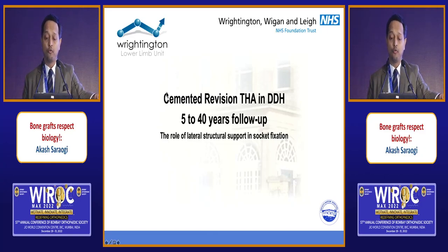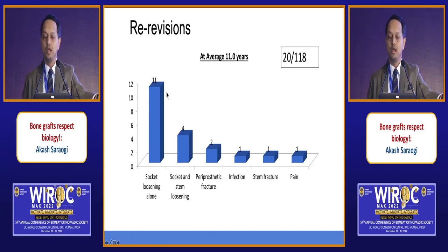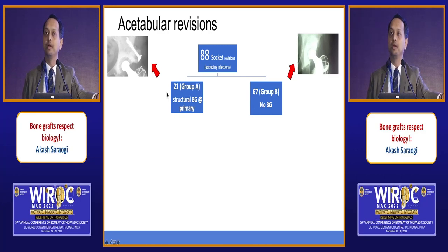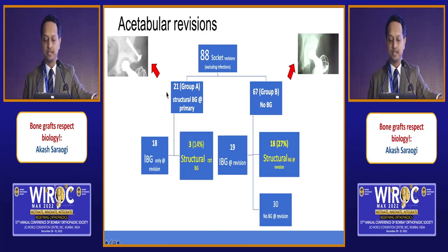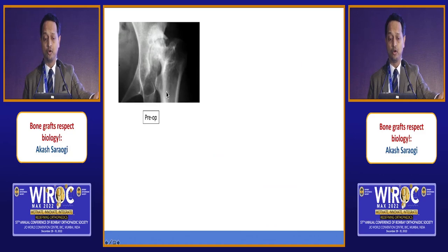Long-term outcome of structural grafts: a study with 5 to 40 year follow-up in cases of DDH looked at all revisions. The most common cause of revision was loosening of the cup. Of 88 revisions, structural bone graft was used as primary procedure in 21 cases; in 67 it was not. In cases where structural graft was used, only impaction bone grafting was required for revision because bone had been reconstituted. In cases where no structural graft was used, structural bone grafting was needed in 27% of later revisions.